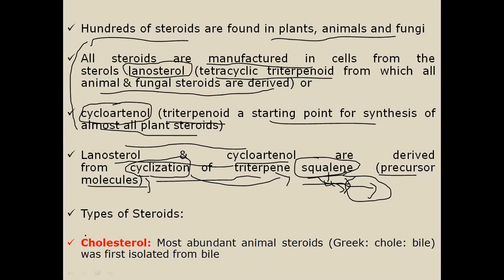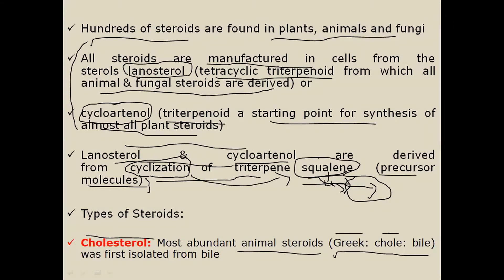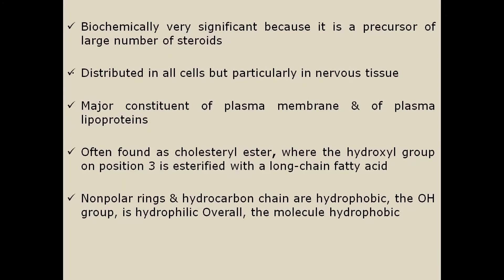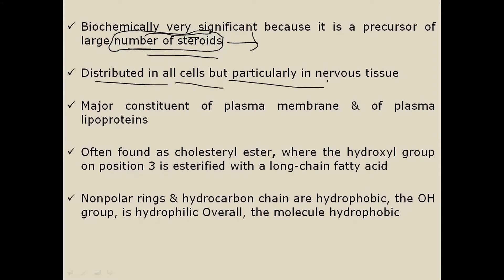The first important type of steroid is cholesterol. It is the most abundant animal steroid and is derived from the Greek word 'chole' meaning bile, because it was first isolated from bile. Biochemically, cholesterol is very significant because it functions as a precursor molecule for a number of steroids.